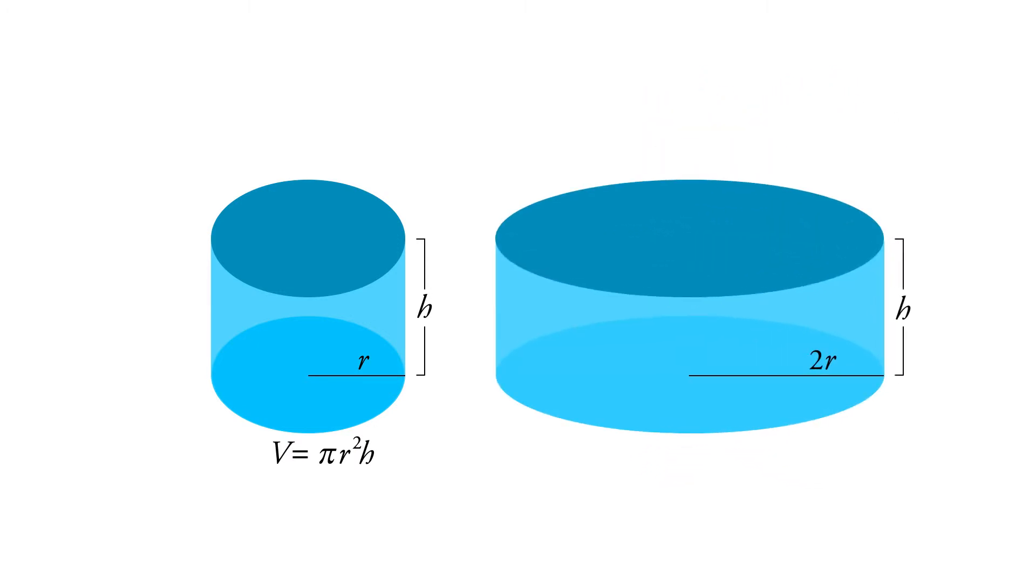And so if we double the radius, we're going to have one-quarter of the height. Let me show you how to figure that out.